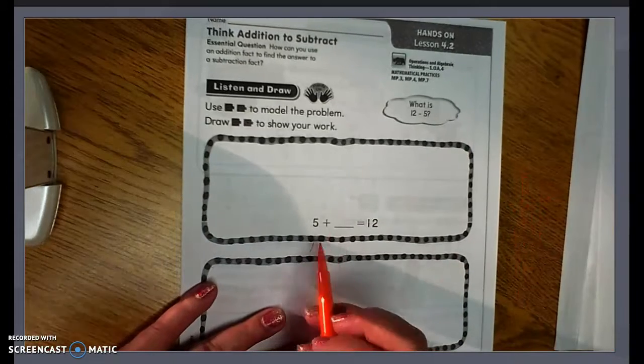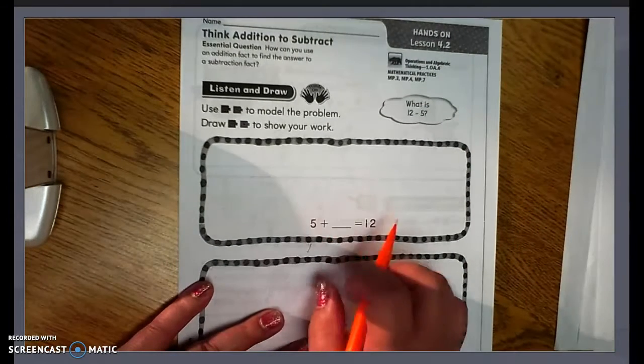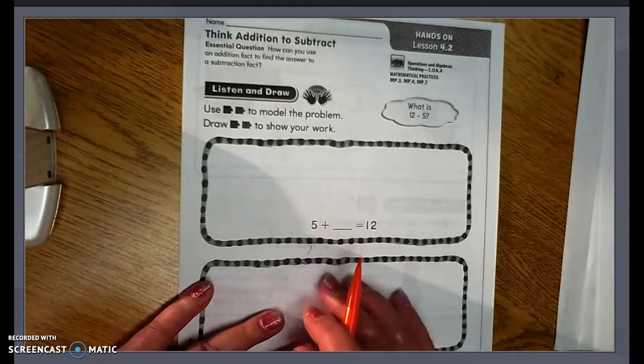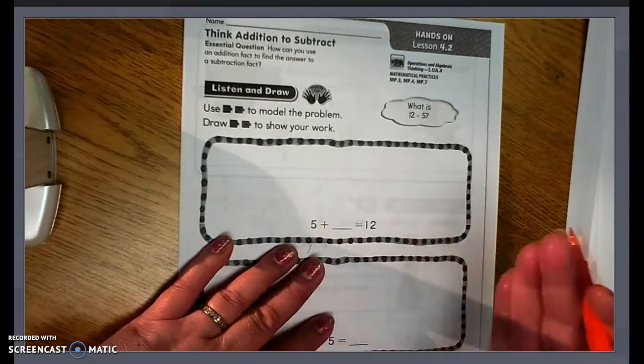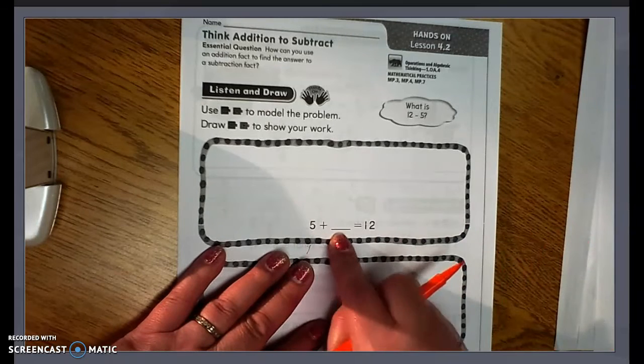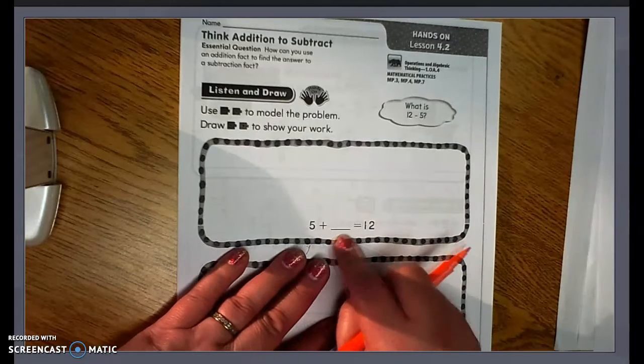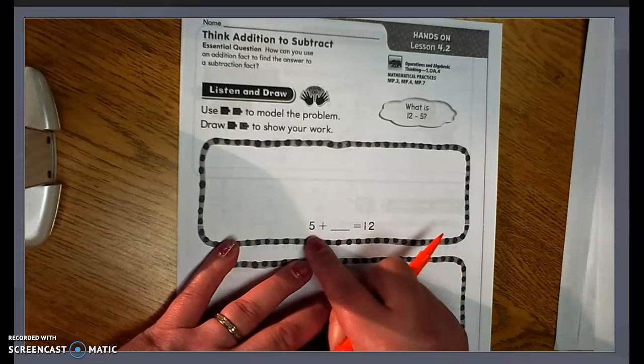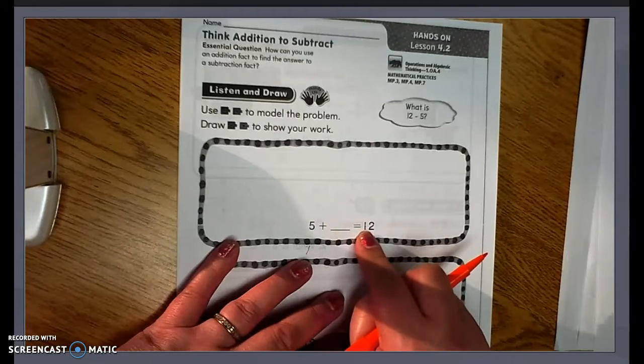Now, so what you want to do is we see that this is an addition equation. So we're going to have to somehow move these things around to make this a subtraction equation. So the opposite of addition is subtraction. So what we need to do is we need to find this missing number here. So what we can do is we could take the total amount because this number 5 plus this missing number equals 12.